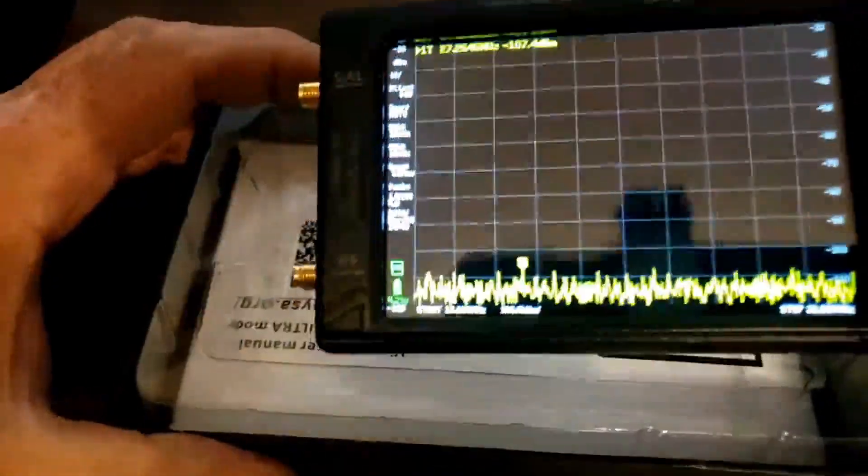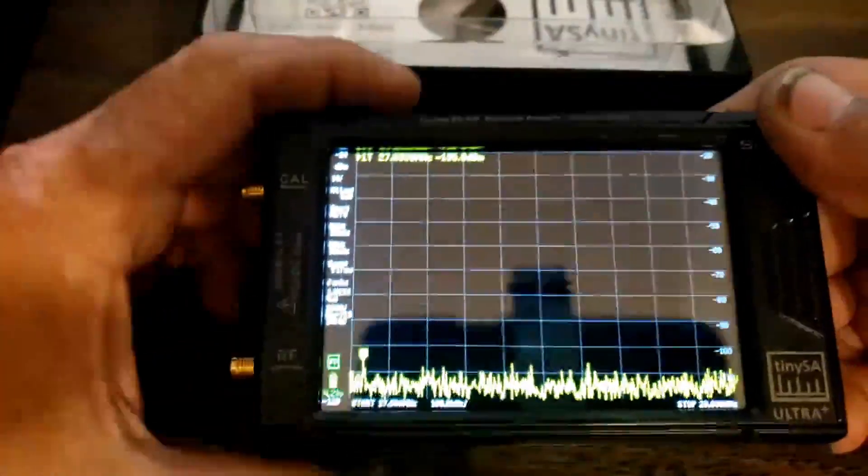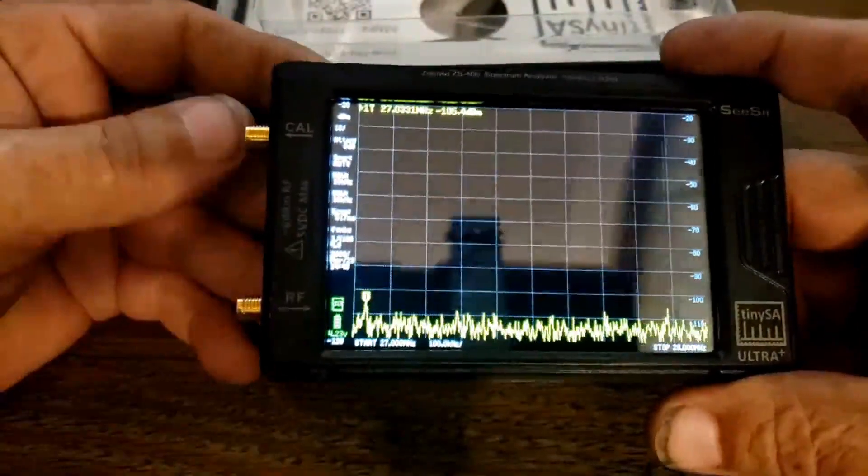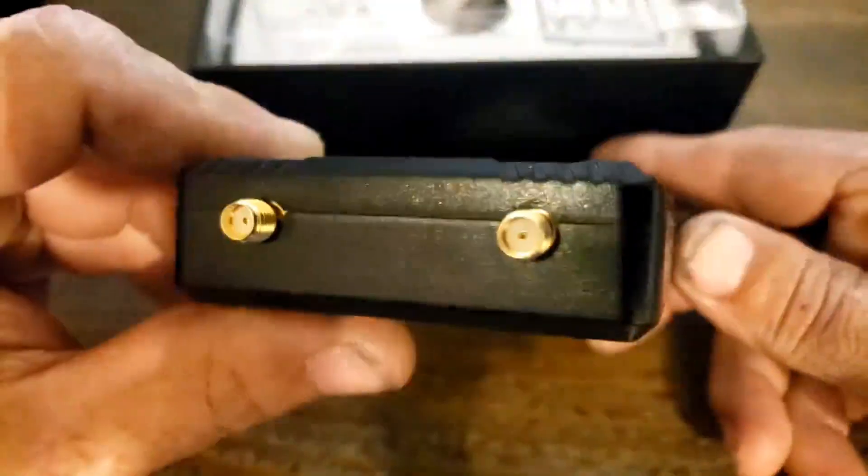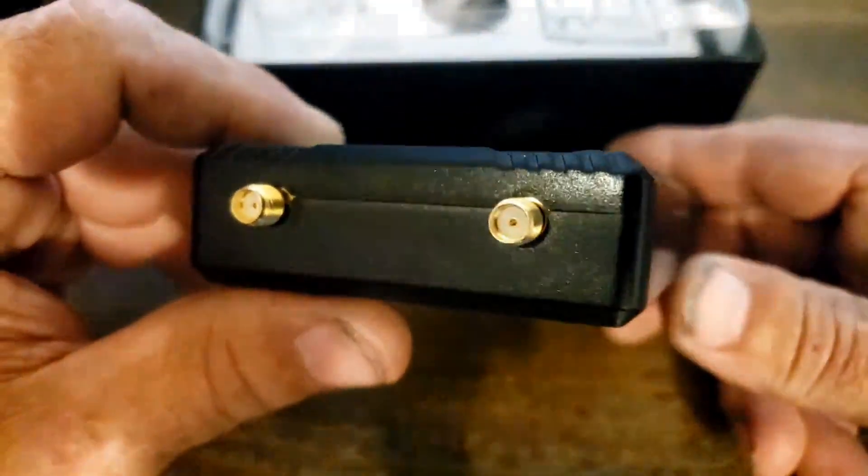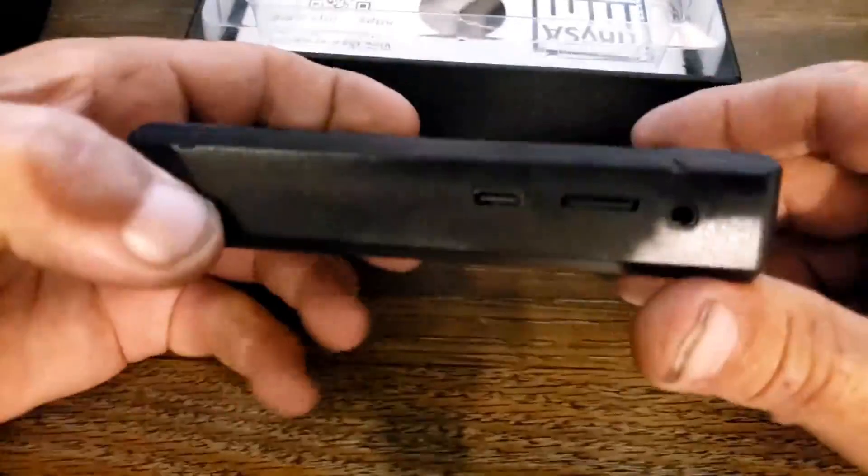We take that out of the box. On the side we have a couple of ports: we have the calibration port which are SMAs and we have the input.